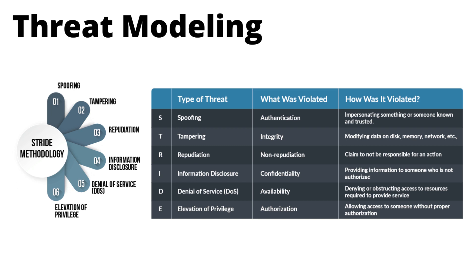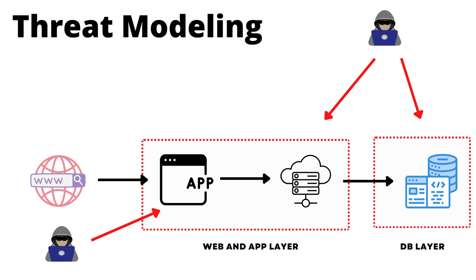Threat modeling is more application-focused. The questions you ask are: what are we building, what can go wrong, and what can we do about it? There are many methodologies available — the most common is STRIDE, which divides threats into six categories: Spoofing, Tampering, Repudiation, Information Disclosure, Denial of Service, and Elevation of Privilege. Every threat you can think of for any application will fall into one of these six categories. Initially developed by Microsoft, it became an industry standard. You can use a free tool or simply a whiteboard — you draw a diagram, think about data flow, trust levels, and what threats can happen.